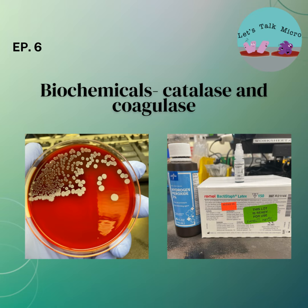Listeria is a very important gram-positive rod that can cause bacteremia, stillbirth, and bacterial meningitis. When you have a newborn with a positive blood culture, you need to rule out Listeria. It grows on cold cuts, so people can get it from eating cheese, ham, and even lettuce — you can get it from food. It is very significant clinically.